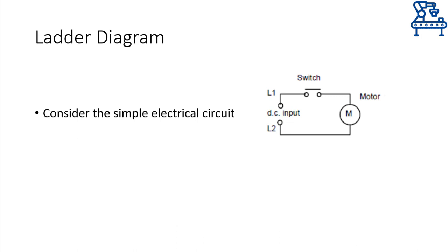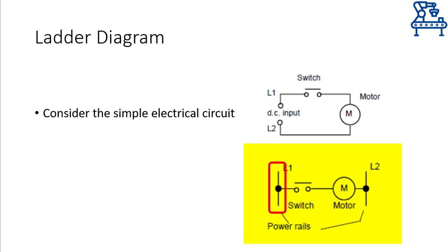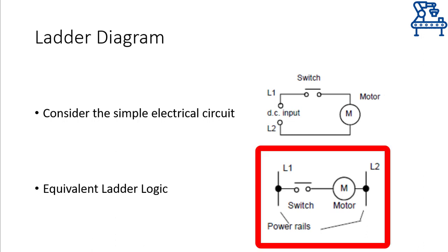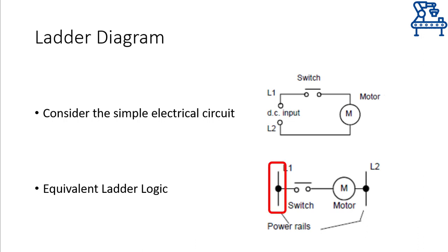Consider the simple electrical circuit shown here. Using the conventional flow of current, there is a high voltage point of the DC input source connected in series with a switch, then to a motor, ending at the low voltage point. Now, if I redraw this circuit with a high voltage line on the left and a low voltage line on the right, with a switch and motor in series in between — there is no difference between these two circuits, only the drawing style is different. This is the ladder logic representation of the simple motor circuit. In ladder logic, the high voltage line is always on the left while the low voltage line is on the right, and they are called power rails.